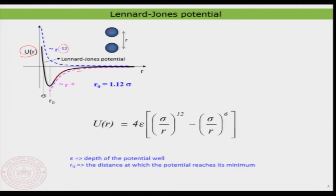The form of the Lennard-Jones potential has two contributions: one is basically an r raised to 12 contribution and another is an r raised to 6 inverse contribution. That is what decides the potential, where epsilon indicates the depth of the well. You also have r₀, which is the distance at which the potential is at its minimum. Using this Lennard-Jones potential between two different atoms coming together, you can understand what is the strength of the interaction between these two atom-like objects.